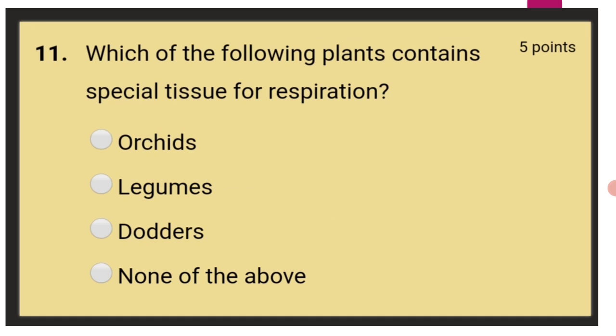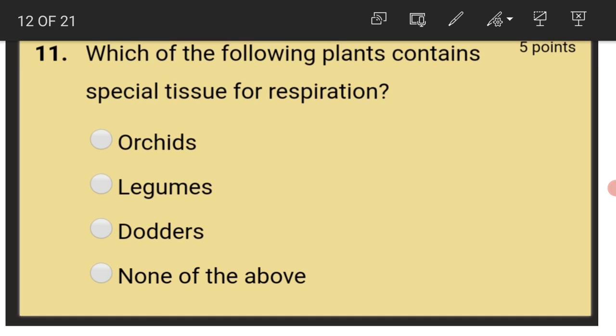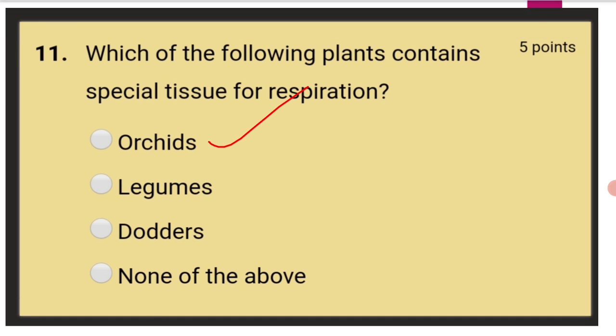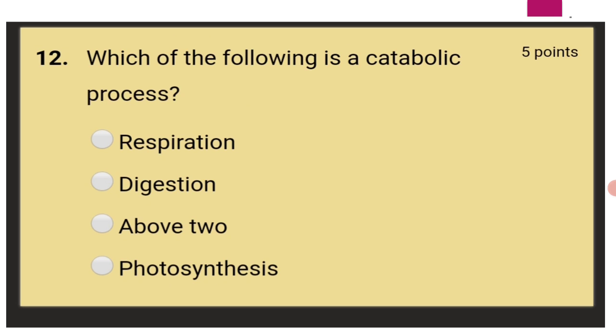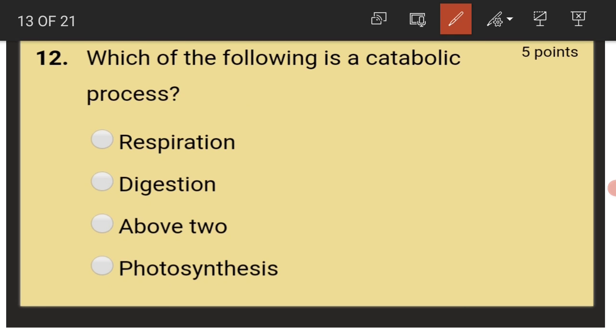Which of the following plants contains special tissue for respiration? Orchids. Which of the following is a catabolic process? That is both respiration and digestion. Both is the answer.